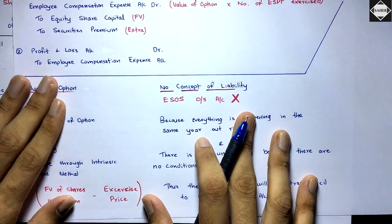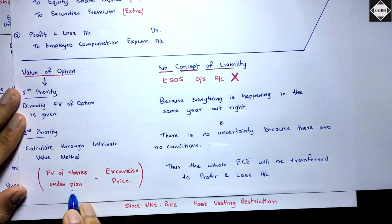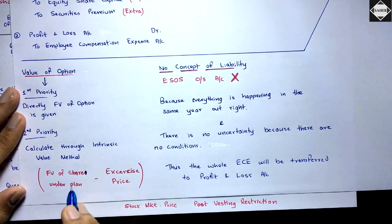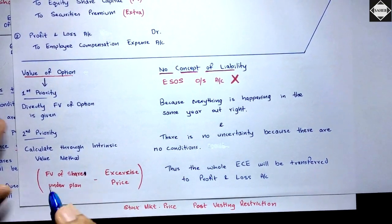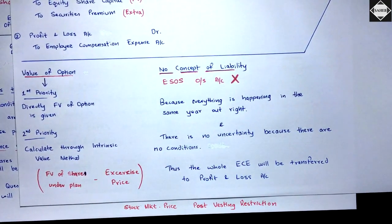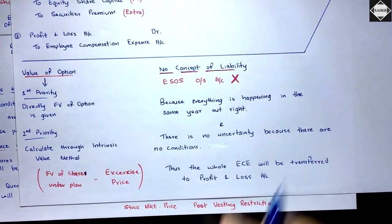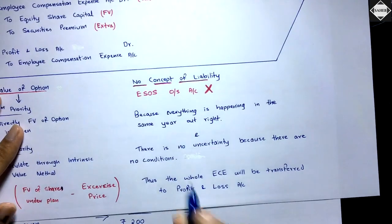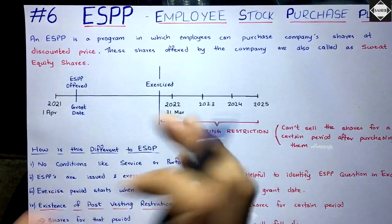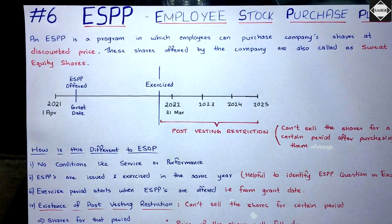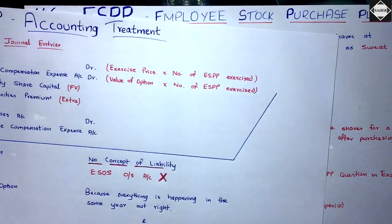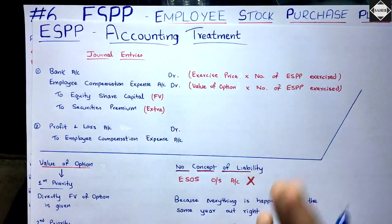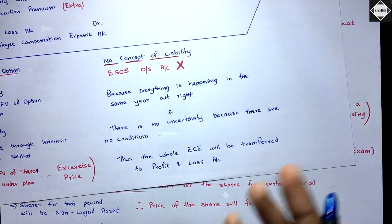To summarize the value of option calculation: if only one market price is given (no two prices), take that as the fair value of shares under plan. There is no ESOP Outstanding account in ESPP because everything happens in the same year — no liability is created, nothing is carried forward. There is no uncertainty because there are no performance or service conditions; all offered employees are directly eligible.